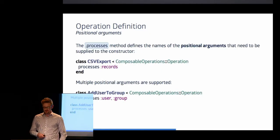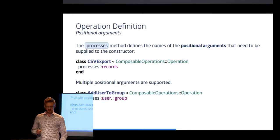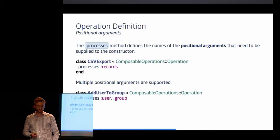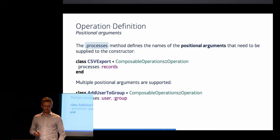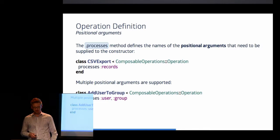But let's talk about the individual aspects that make up an operation. There is the call to the macro method processes, and what this method does, it defines the positional arguments that the constructor of your operation takes when you invoke it, and we will see this in a minute. And you can specify an arbitrary amount of positional arguments you want to provide. In the case of our CSV export, we provide an array of records. But you could think of an operation called addUserToGroup, where you would provide a user and a group.